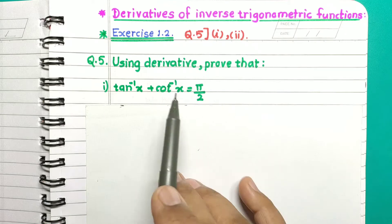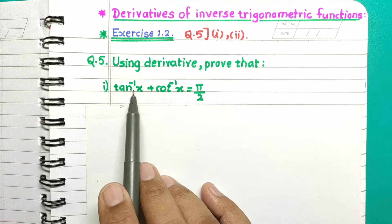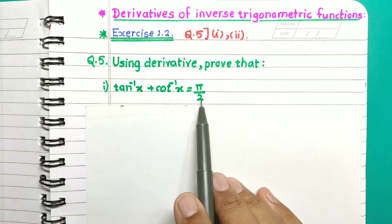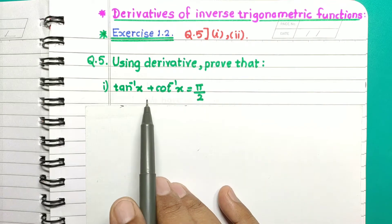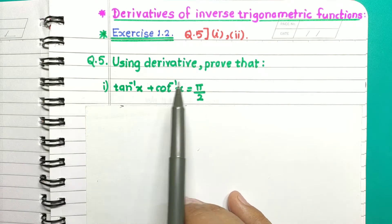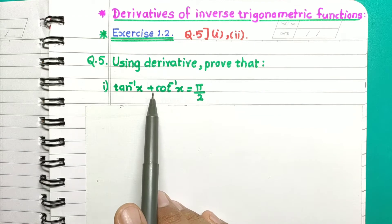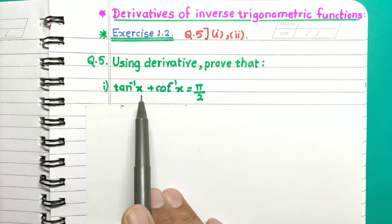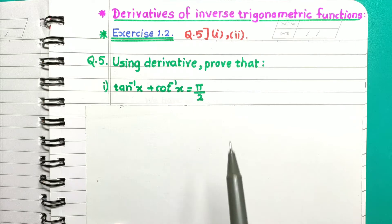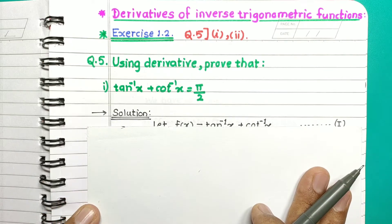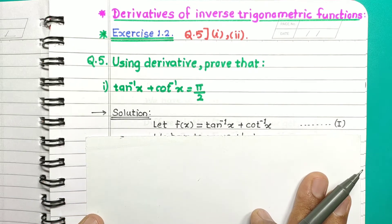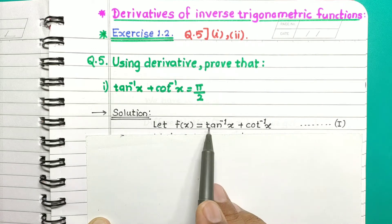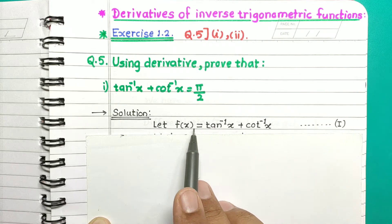The question is: using derivatives, prove that tan inverse x plus cot inverse x is equal to pi by 2. This is one of the properties of inverse trigonometric functions, and here we have to prove this property using derivatives. In the solution, consider tan inverse x plus cot inverse x as f of x.